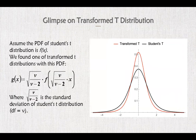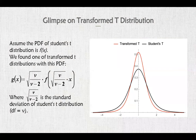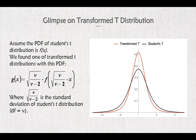Before we move on to the next part, let us take a look at the transform T distribution function we will mention during our project. Assuming the probability distribution function of the Student T distribution is f(x), we can find one of the transform T distributions with the following probability distribution function. Compared with the Student T, this transform T distribution is relatively thinner and taller, which will be helpful for our research.